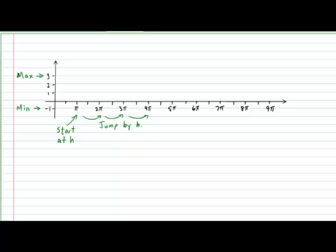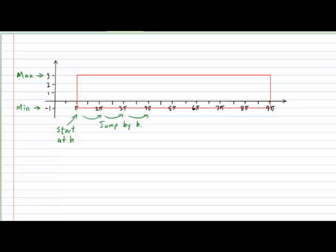The next thing to draw is the box which will contain the cycle. The height of the box will be contained between the maximum and minimum values. The length of the box will start at the value of H and end at the end of the cycle, calculated by H plus the period. In our example, the box starts at π and ends at 9π. Please indicate clearly on your diagram how the box starts and ends. Cutting the box in half vertically and horizontally will help with graphing.